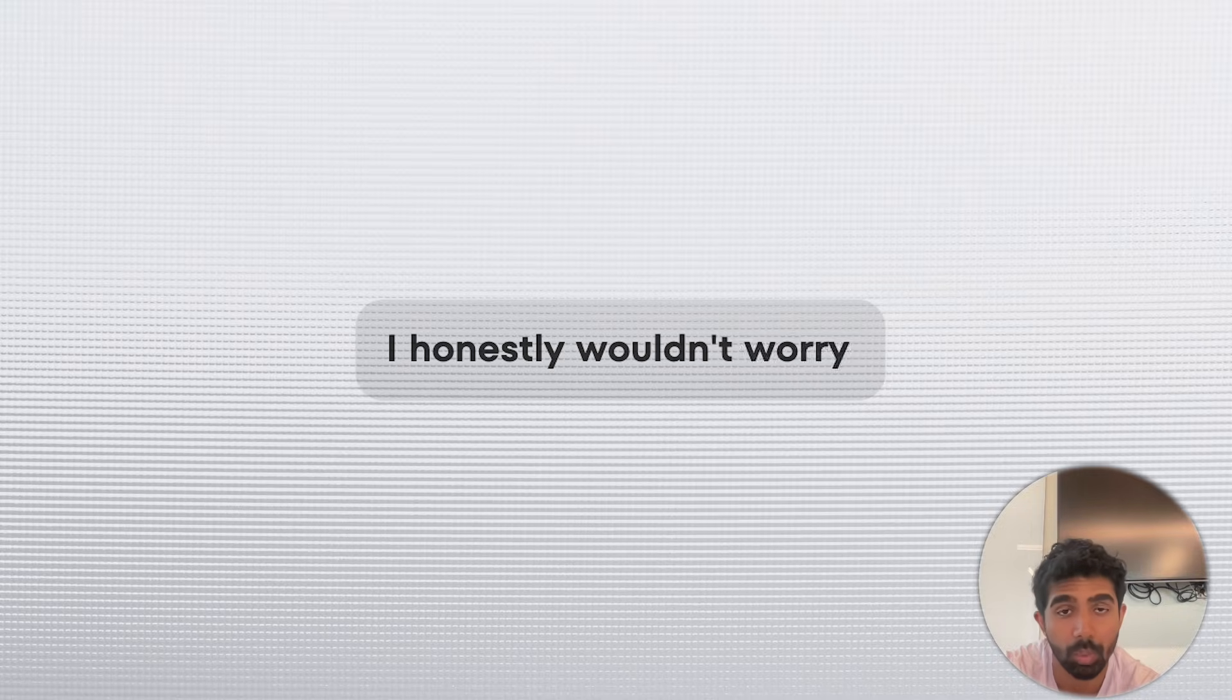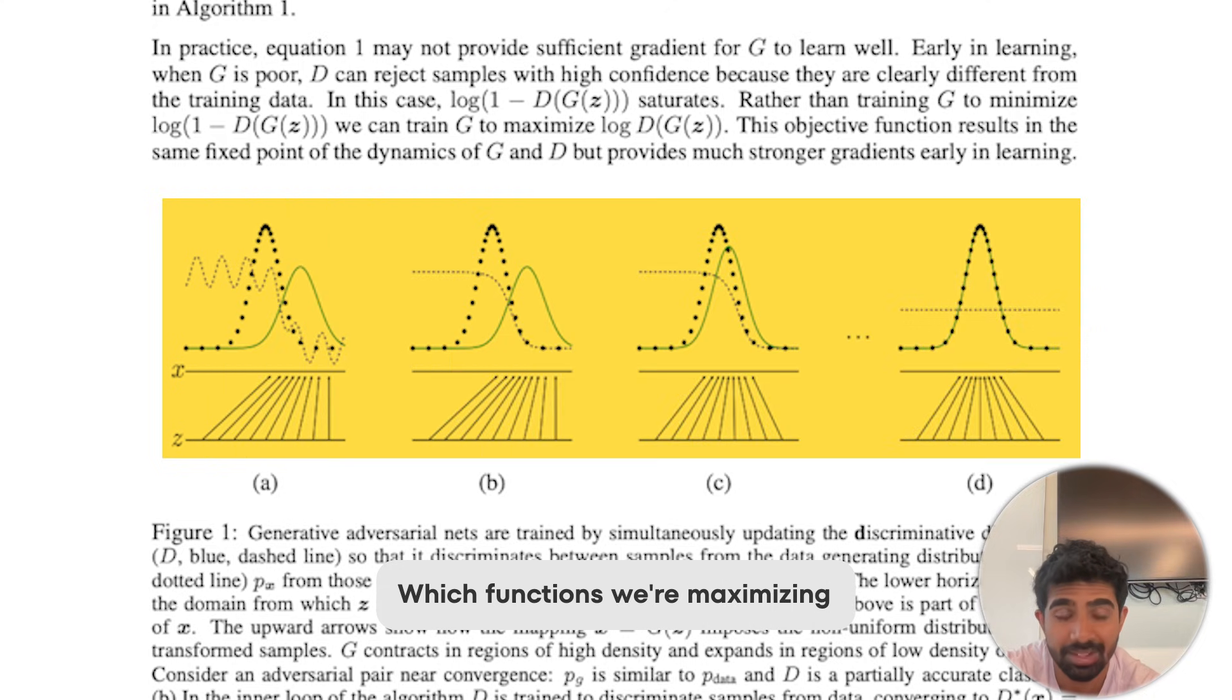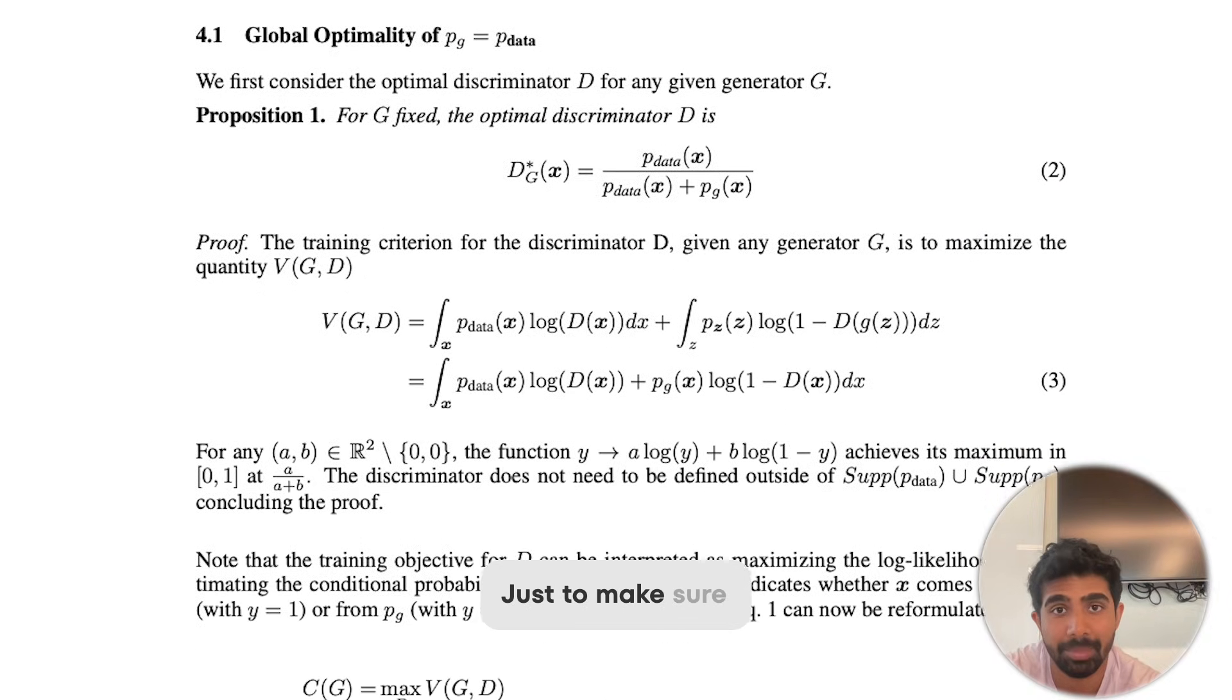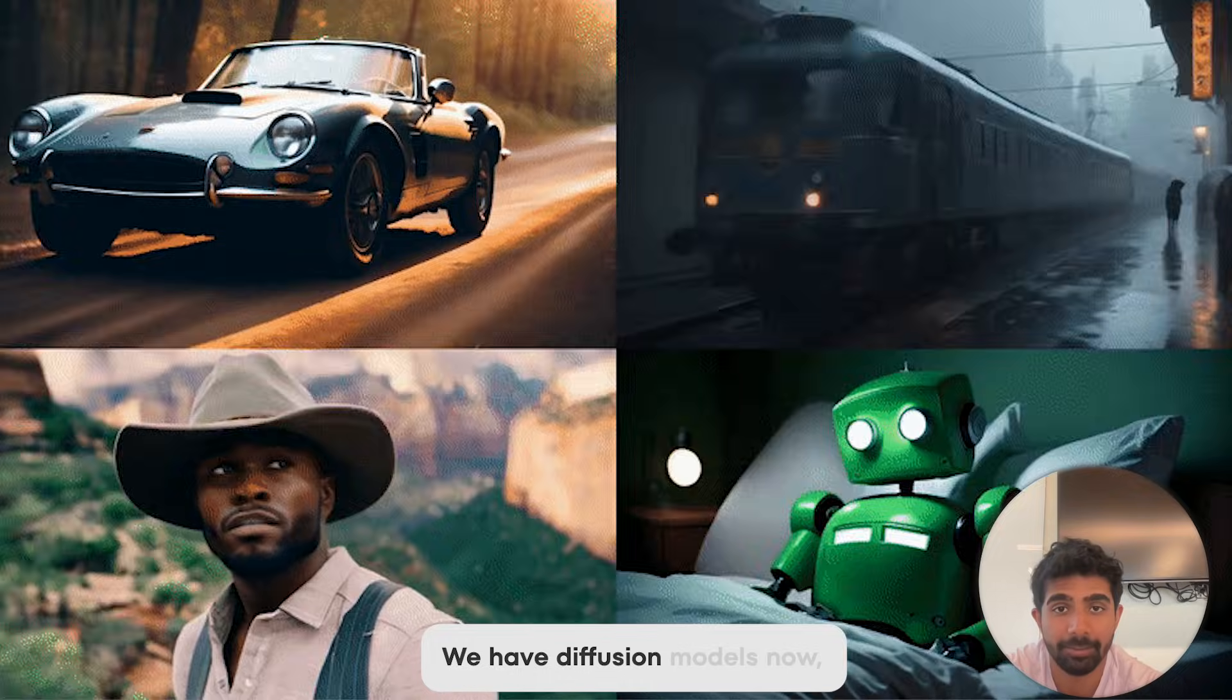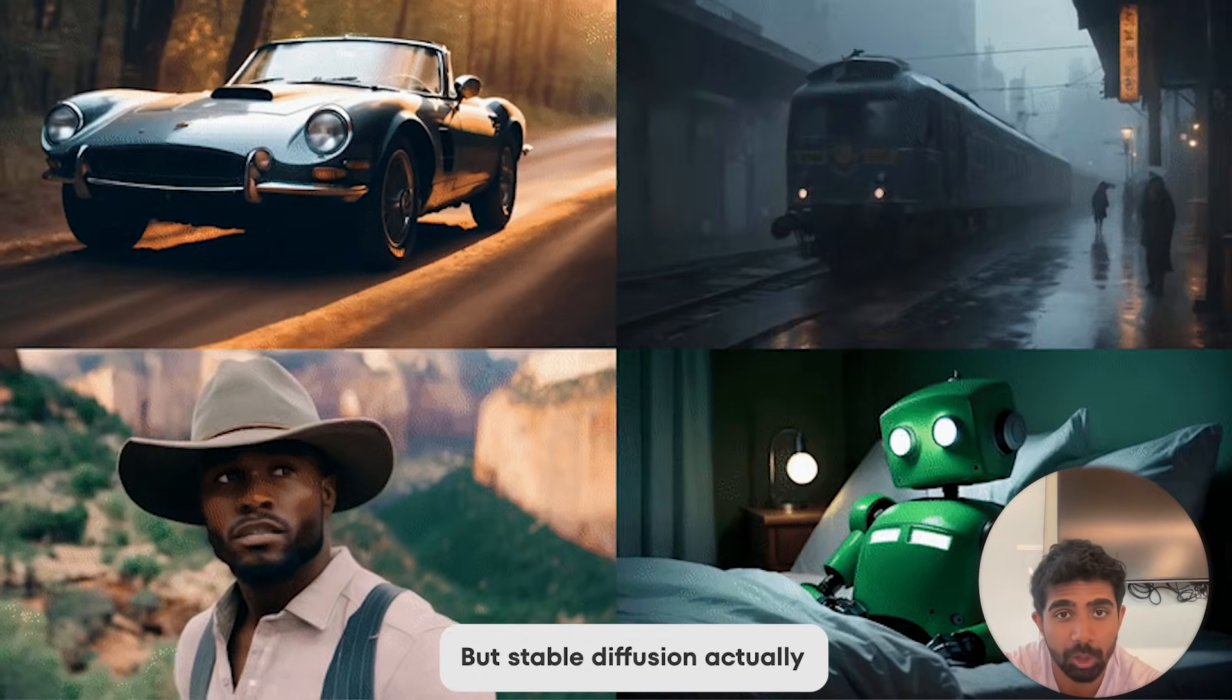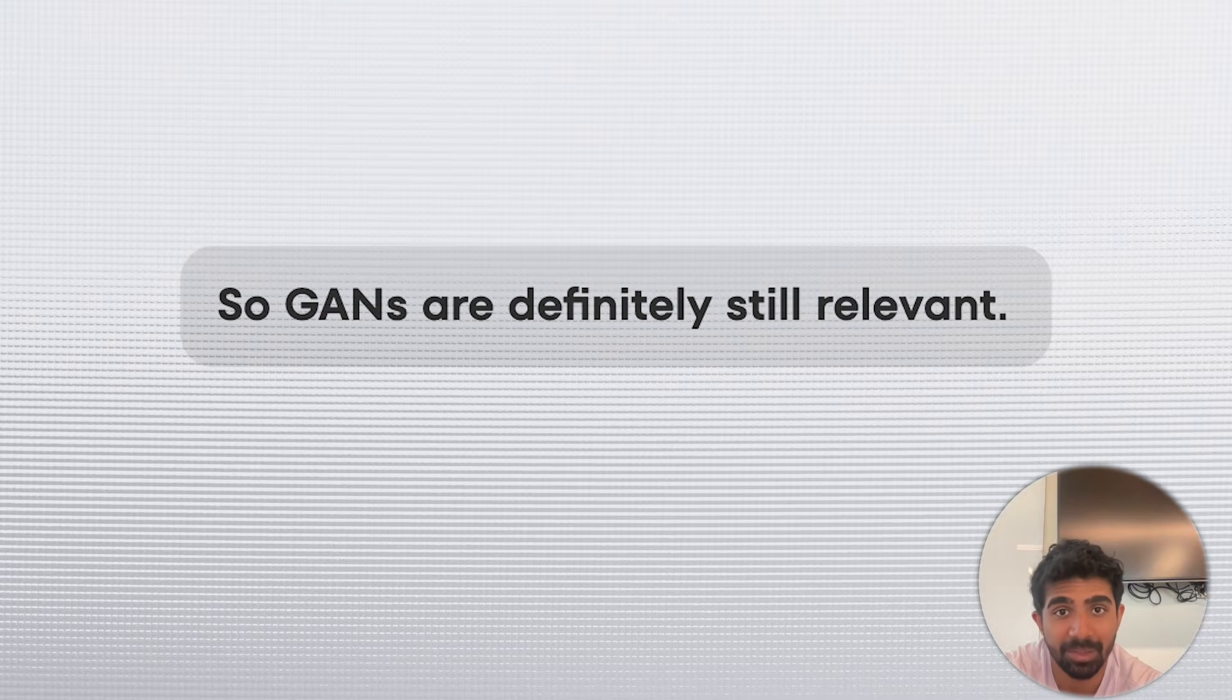I honestly wouldn't worry about that the first time you're reading this paper. Just try to understand which functions we're maximizing and which functions we're minimizing. Pseudocode section is also really useful to understand, just to make sure you've got the general idea of GANs. Also, a misconception about GANs is that because we have diffusion models now, maybe they're not used anymore. But stable diffusion actually uses GANs for the autoencoder. So GANs are definitely still relevant.